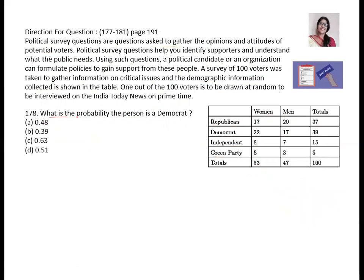Next question: what is the probability that the person is a Democrat? It is very easy. Total Democrats: 39. Total voters: 100. So the answer is 39 upon 100. The probability of Democrat is 0.39. So B is the answer.